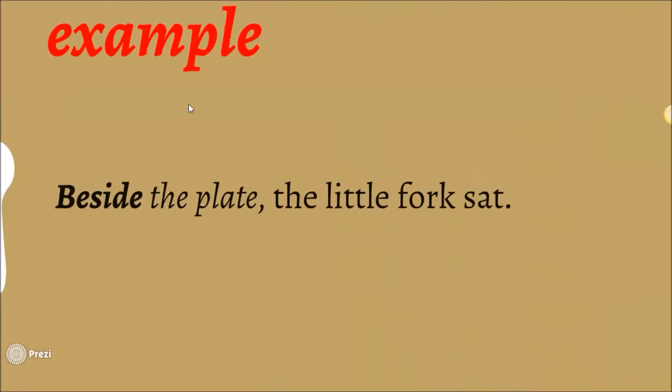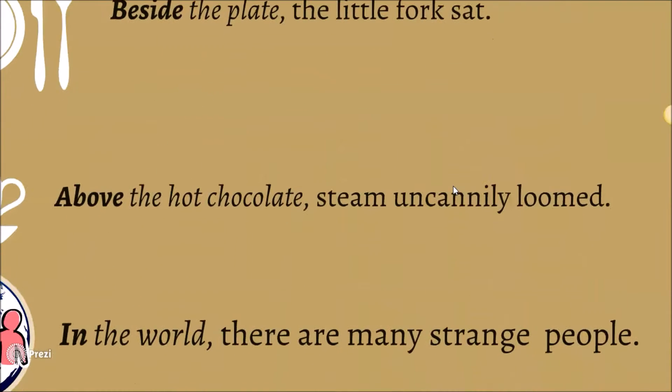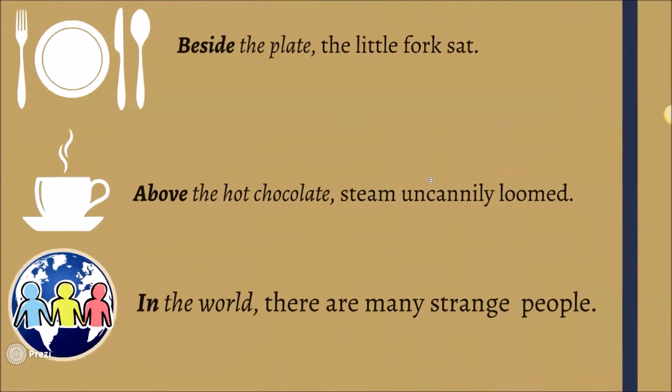Beside the plate, the little fork sat. Beside is the preposition. Beside the plate is the prepositional opener. And then there's the rest of the sentence. Above the hot chocolate, steam uncannily looms. Above is the preposition. Above the hot chocolate is the opener. And then there's the rest of the sentence.